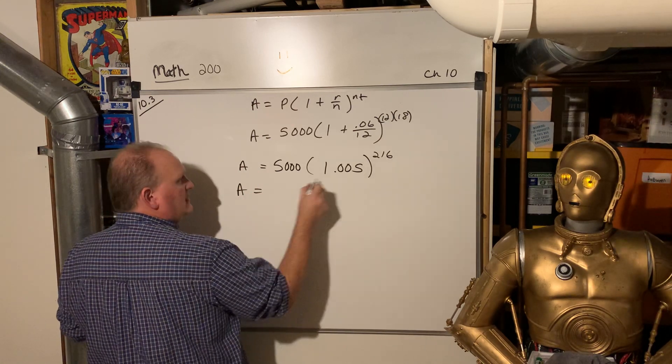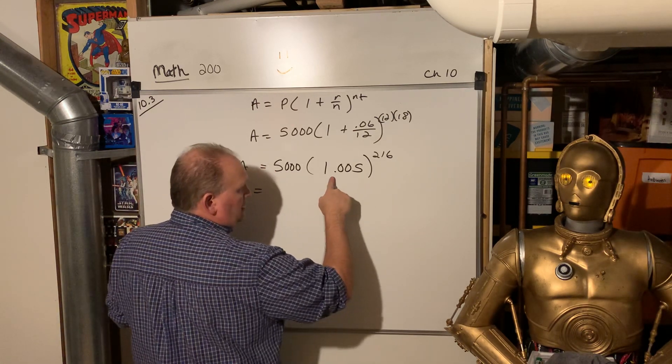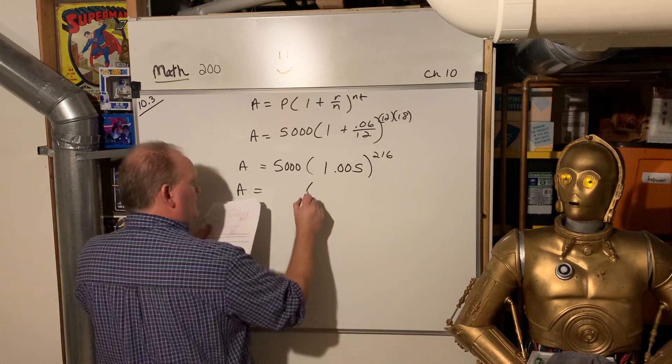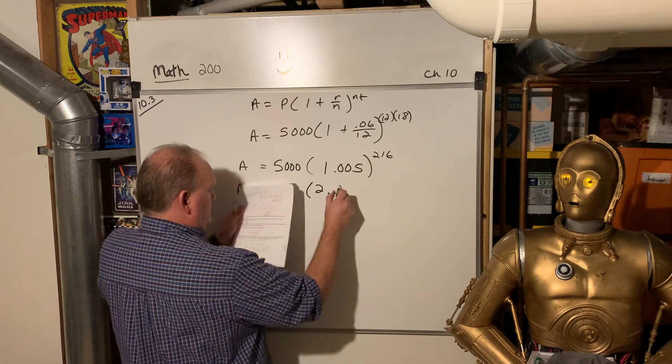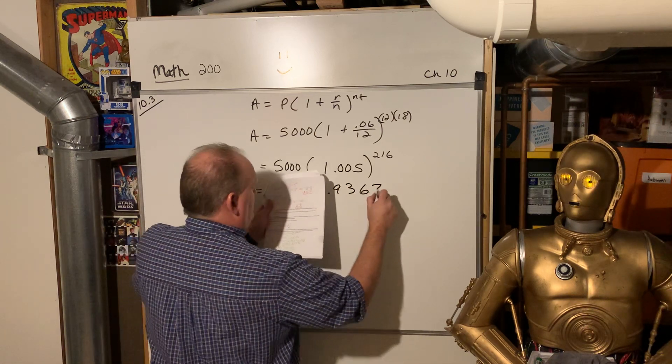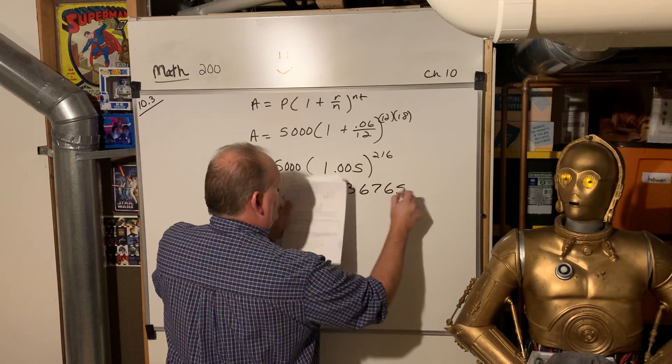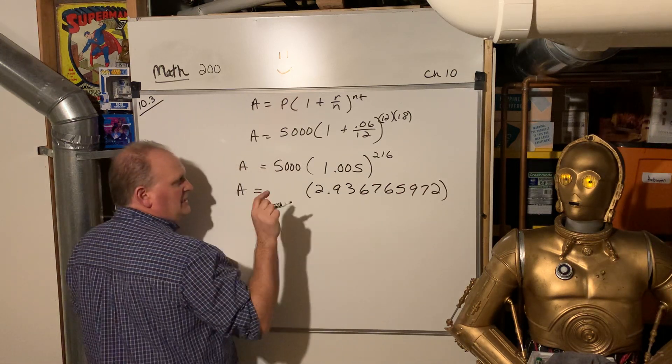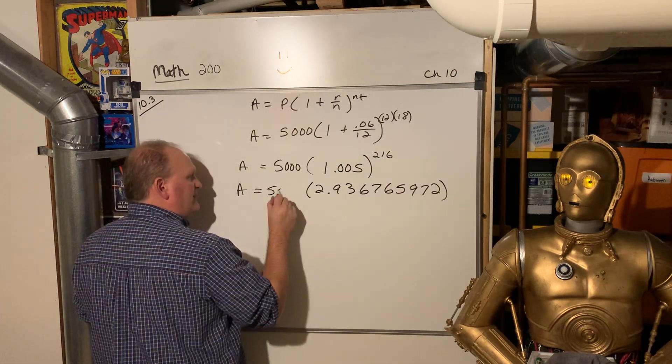So when you take 1 point, you do this first in your calculator, 1.005 to the power 216, hit enter, you'll get almost 3, 2.936765972, and just leave that in your calculator, and then just hit the times button, and then 5,000.